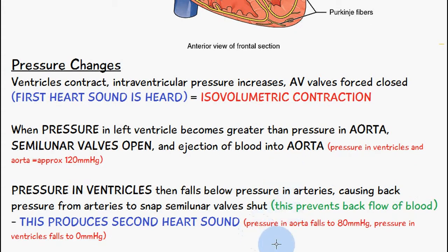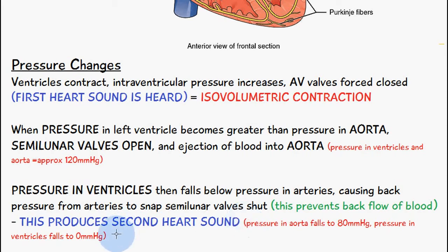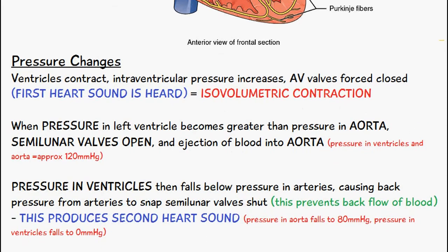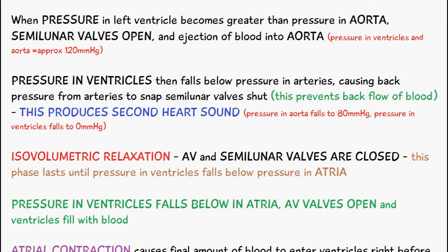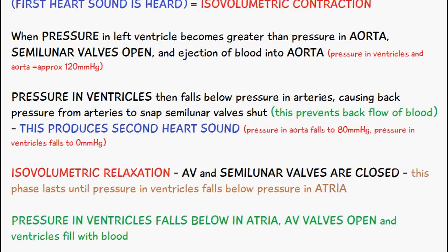At this point, the pressure in the aorta falls to 80 millimeters of mercury and the pressure in the ventricles falls to zero millimeters of mercury. The following phase is isovolumetric relaxation.